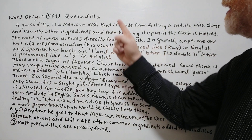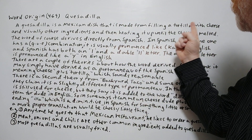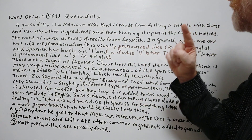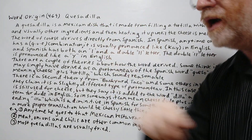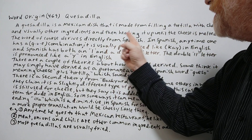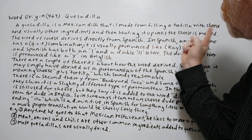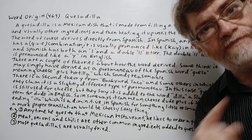Quesadilla is a Mexican dish that is made from filling a tortilla with cheese and usually other ingredients and then heating it up until the cheese is melted.